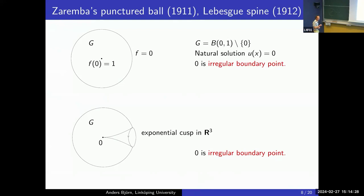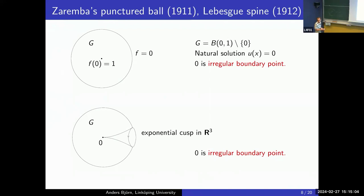Lebesgue — the same person as with the Lebesgue measure — came up with a different example the next year, called the Lebesgue spine. This must be done in ℝ³. It's an exponential cusp disappearing at a point — think of an apple with a stalk. It turns out that the tip of the stalk is an irregular boundary point.